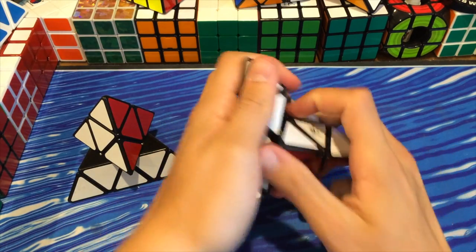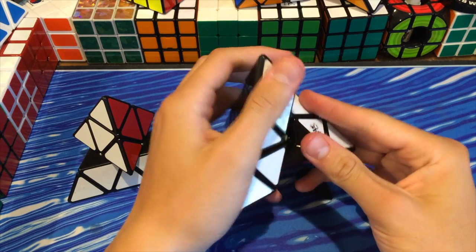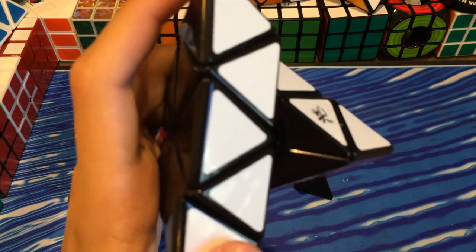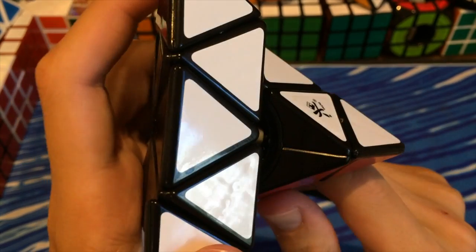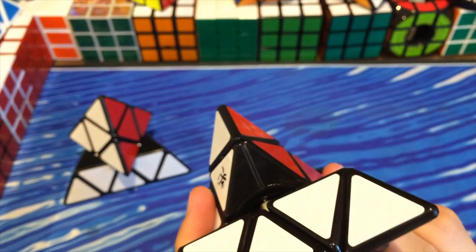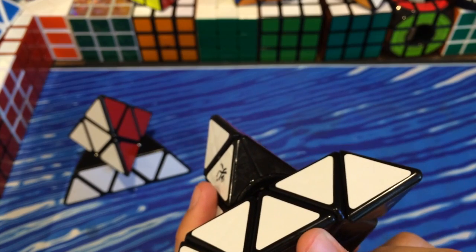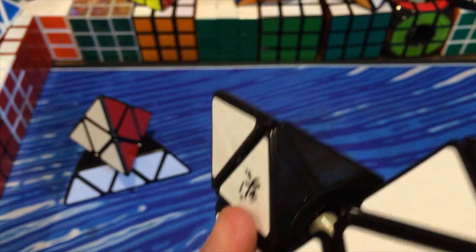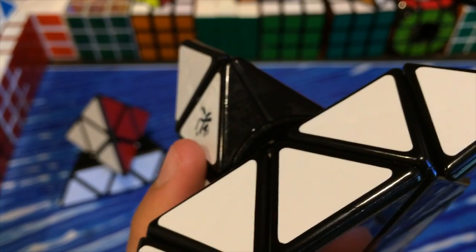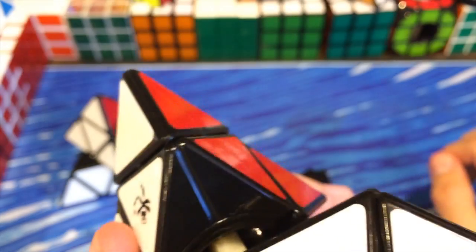However, when you take a look at the inside, I don't know if you can see, but there is a ball bearing inside. Right there at the tip of this triangle, there's a ball bearing you can see.